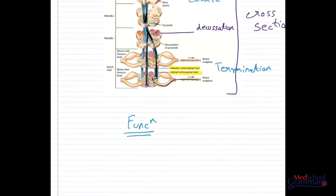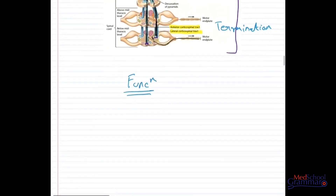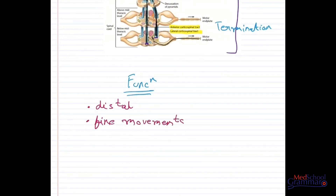Now, the function: what group of muscle fibers are affected? The distal group of muscle fibers — hands and fingers — are affected. These control fine movements such as drawing, painting, and writing, which are all controlled by the corticospinal tract. Apart from fine movements, the corticospinal tract also controls the muscles of speech.